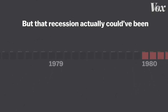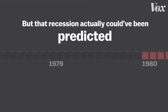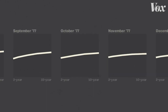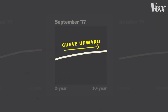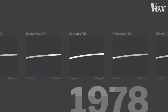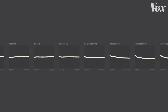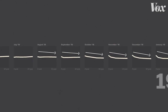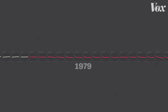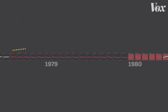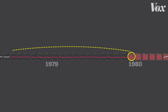But that recession actually could have been predicted if you were looking at a very specific type of line. Normally this line points slightly upward, like here in September 1977. But about a year later, it started pointing the other way, just slightly. And then not long after that, boom — the 1980 recession.